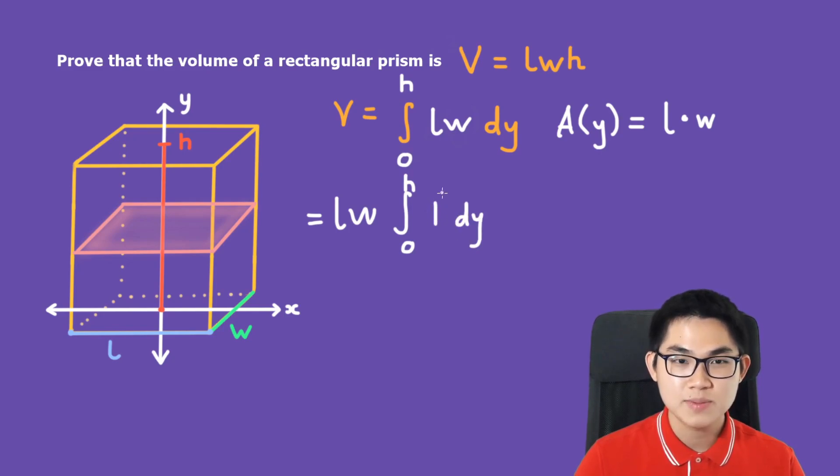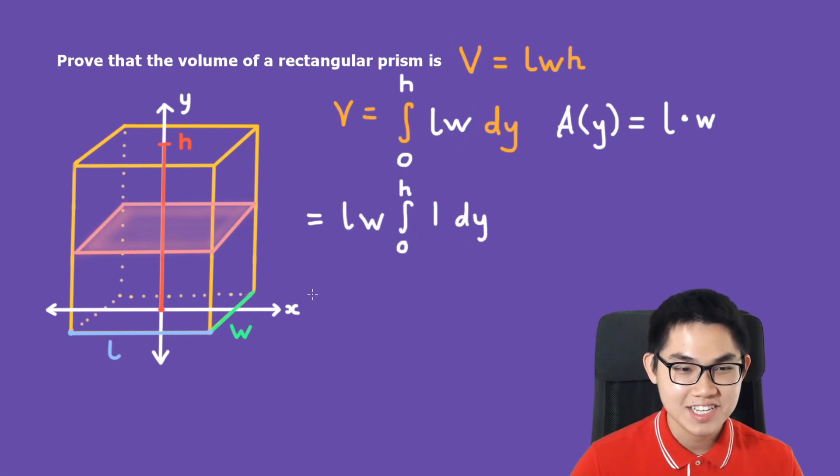And why is there a 1 here? It's because you can think of this as L times W times 1. When you factor out the L and W, you still have the 1 in here. This is equal to L times W times the anti-derivative of 1, and that's going to be Y. And we still have the H and the 0 here.